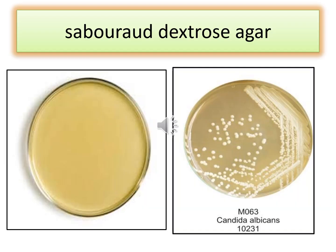Sabouraud dextrose agar is a type of growth medium containing peptones, used to cultivate dermatophytes and other types of fungi such as Candida species at 20°C, and can also grow filamentous bacteria such as Nocardia. The pH is adjusted to approximately 5.6 to enhance fungal growth, especially dermatophytes, and to slightly inhibit bacterial growth in clinical specimens. Yeast will grow as creamy to white colonies while molds will grow as filamentous colonies of various colors.